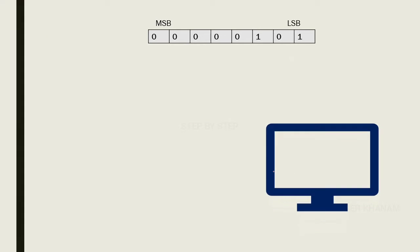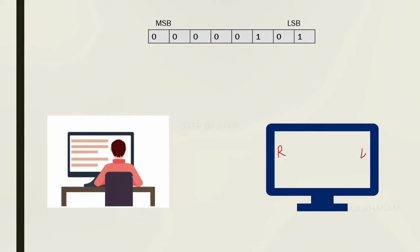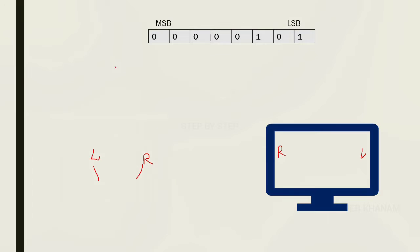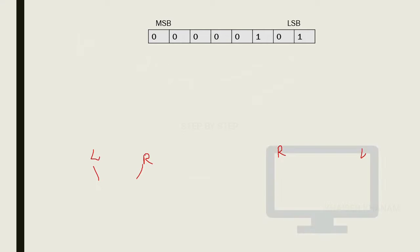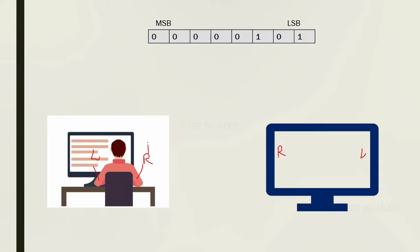Let me show you. Here I have the screen. For this screen, the right side and left side depend on our body position. When we are facing the screen, our right side and left side are from our own body perspective. For left shift, bits move from right to left based on our body position — the reverse of right shift.